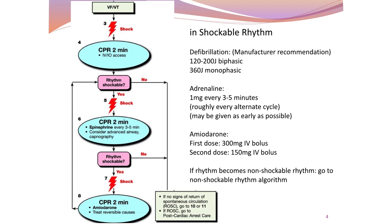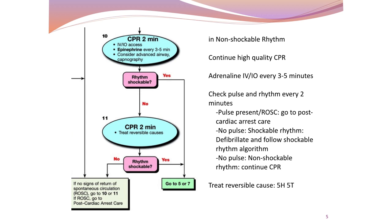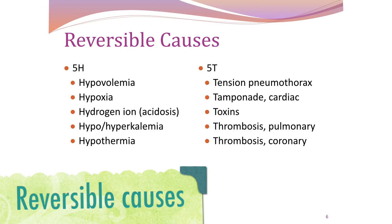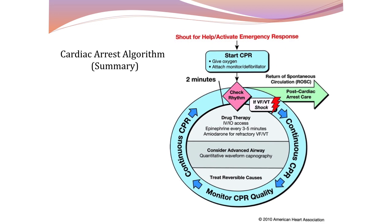If the patient regains return of spontaneous circulation, go to post-resuscitation care. For non-shockable rhythm, continue with high-quality CPR, give adrenaline IV or IO every three to five minutes, and check pulse and rhythm every two minutes. At the same time, treat the reversible causes of pulseless arrest — also known as the 5 H's and 5 T's. This is a summary of the cardiac arrest algorithm.